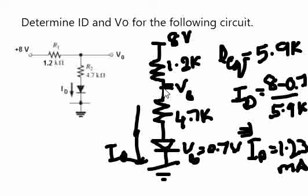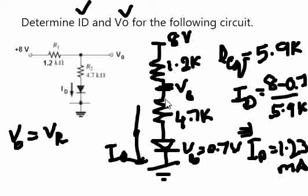Now if you want to calculate, we have calculated ID here. Now if you want to calculate V naught which is this, V naught is nothing but this particular node voltage which is the voltage that will be dissipated across this resistor plus the voltage of this diode. For the diode, we know it is 0.7.